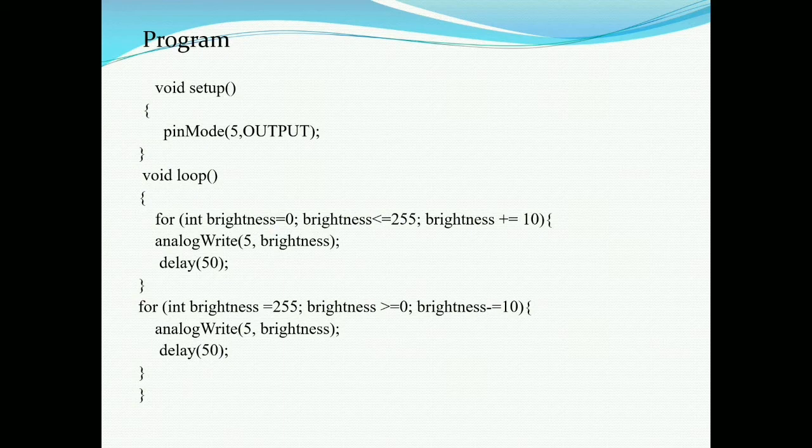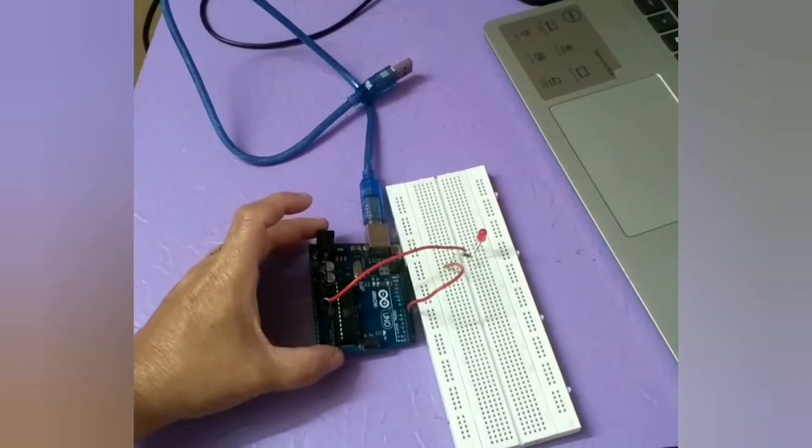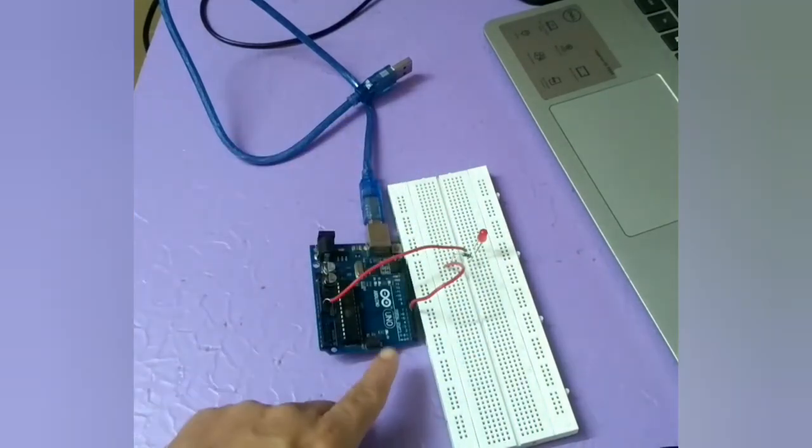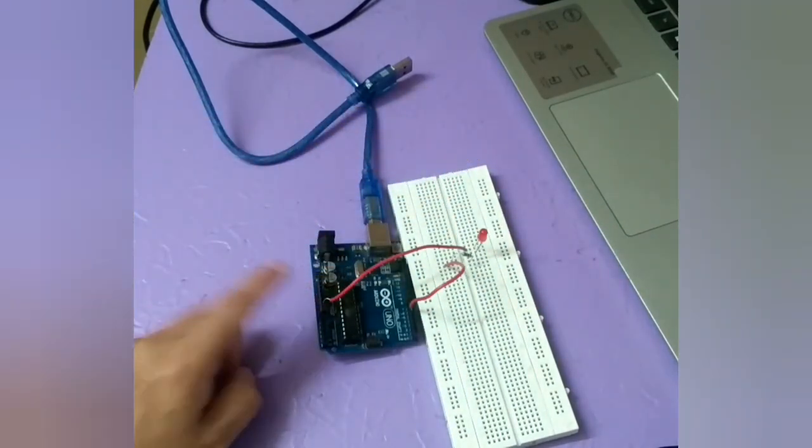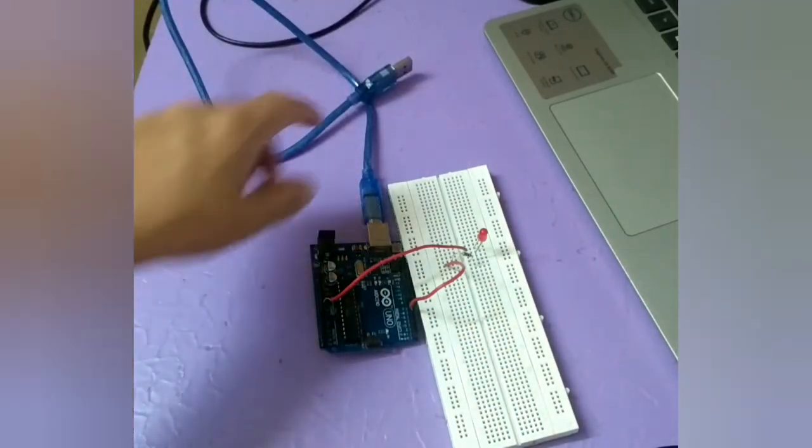Now I will show you the actual output on the Arduino board, actually on hardware. I am copying this same program in my Arduino IDE and I will download that program in the Arduino board. I will show you all the connections. This is a simple setup. This is an LED. The anode of the LED is connected through one resistor to pin number 5 of PWM of Arduino UNO, and the cathode of the LED is connected to the ground pin. Now I will download the same code which I have shown you and I will see the output on this LED.